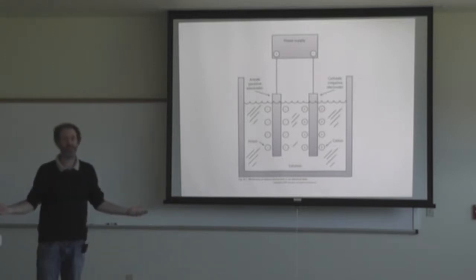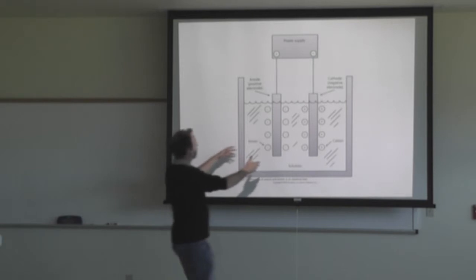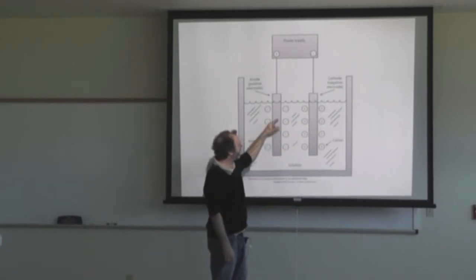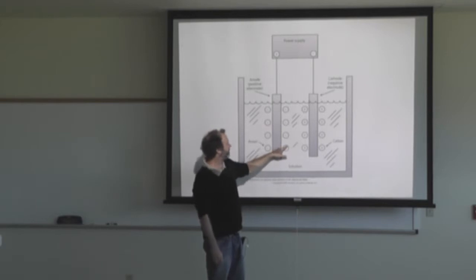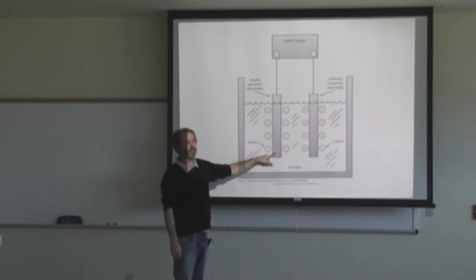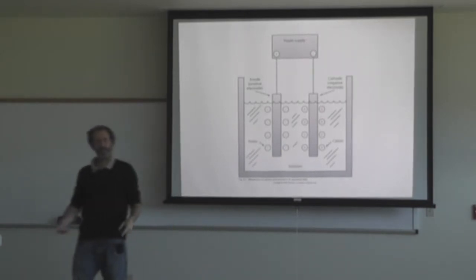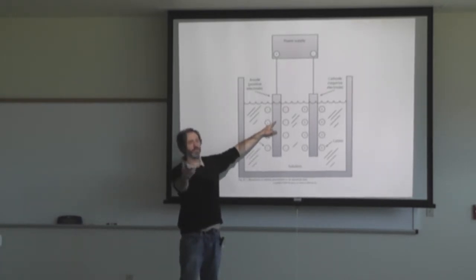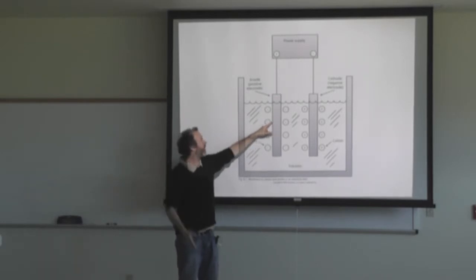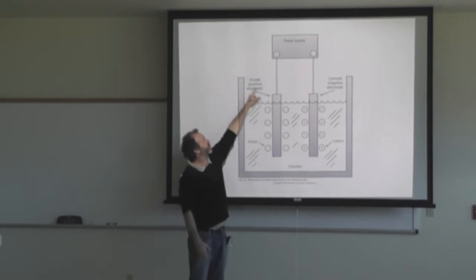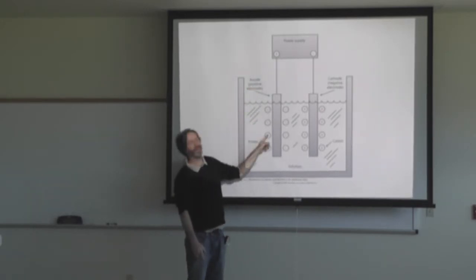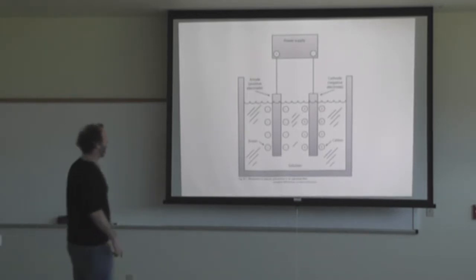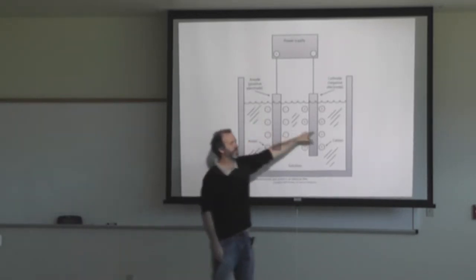You have an electrical field — an external electric field generated by some power supply. You have a positive electrode and a negative electrode. The cations will go towards the negative electrode; the anions will go towards the positive electrode. This is where the confusion always lies in naming the electrodes. The positive electrode is called the anode, because the anions go to it. So the positive electrode is the anode, and the negative electrode is the cathode.